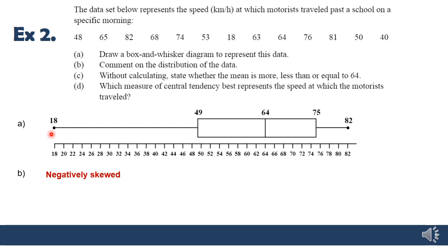Then it says without calculating state whether the mean is more or less or equal to 64. Well, we know that because it's negatively skewed, this 18 is pulling down the mean. So the mean is going to be somewhere less than 64. So the mean is going to be less than 64. But let's just work out the mean because we can do it in our calculator quickly, and we have some shortcuts to do that. Let's just do that quickly. So the mean, I take the sum, which I just showed you how to do in the calculator, divide by the number of values, and I get a mean of 60.2 kilometers per hour. So I can see now that this is definitely negatively skewed because the mean is lower than the median.